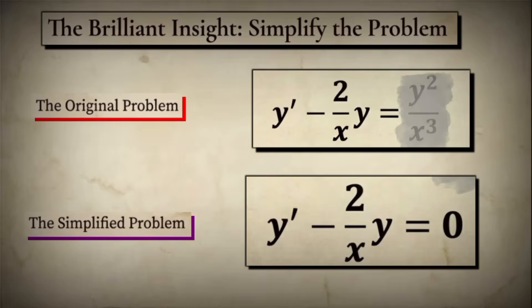Think of it like this: by ignoring the complicated part, we discover the skeleton of the answer. And then we'll use that skeleton to build the complete solution that satisfies the full equation. This technique is called variation of parameters, and it's one of the most elegant problem-solving strategies in all of mathematics.